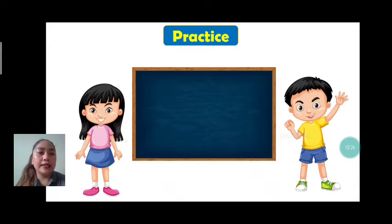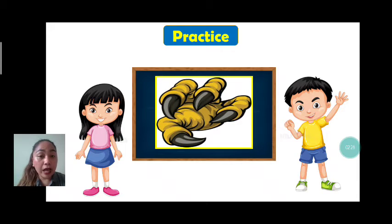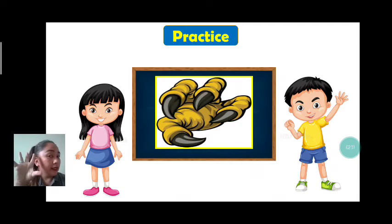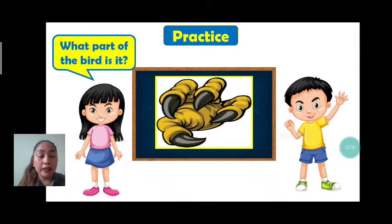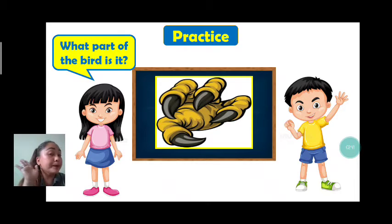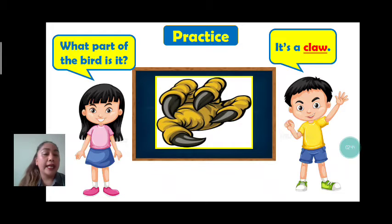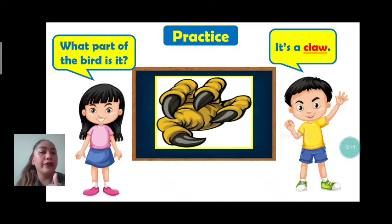Now let's practice. Again, our vocabulary is — what's this? Everybody, claw. What part of the bird is it? Let's answer. Very good. It's a claw. Again, one more time: it's a claw. Very good.